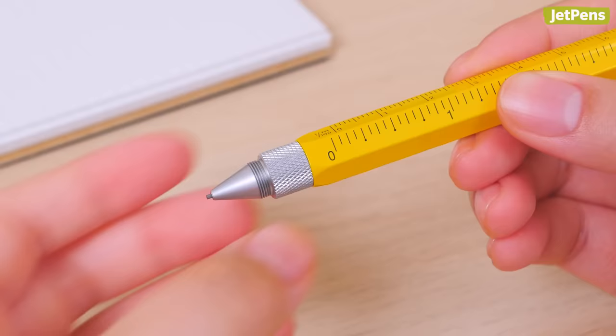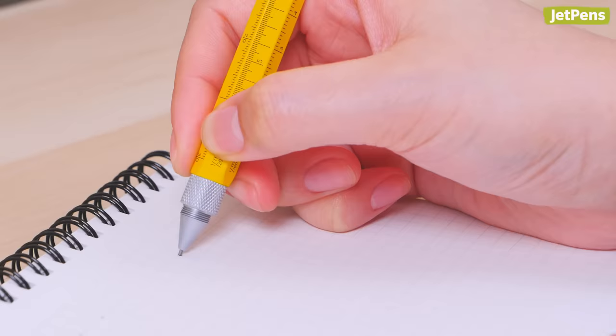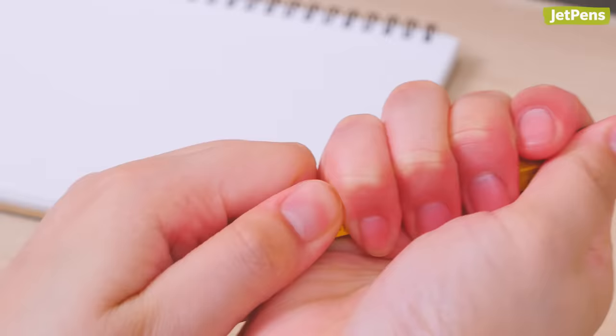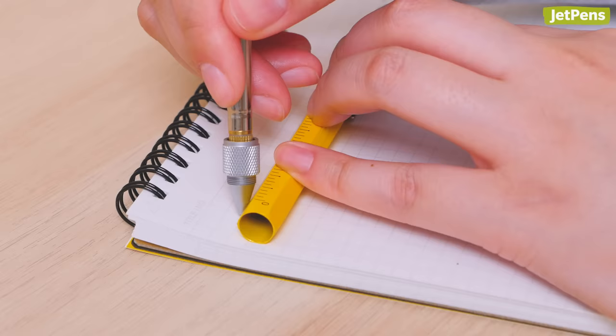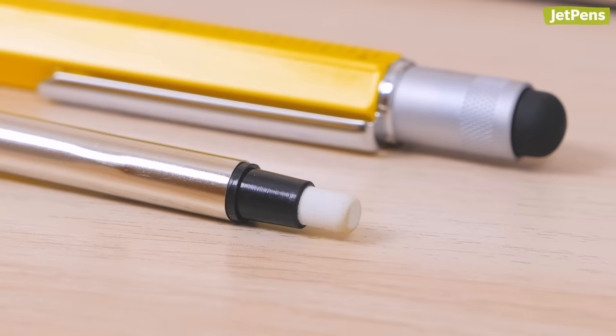The pencil's weighty outer body offers four rulers in inches, centimeters, half centimeters, and third centimeters. You can also use it to draw straight lines. Just pull the pencil component out of the barrel and draw along the edge. Taking out the pencil also reveals a hidden eraser.